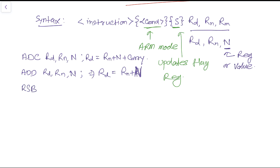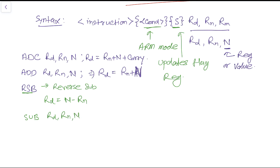Next is RSB, which stands for reverse subtract. In a reverse subtract, RD equals N minus RN. Notice that in a normal subtract — SUB RD, RN, N — RD equals RN minus N. So RSB subtracts the two registers in reverse order.